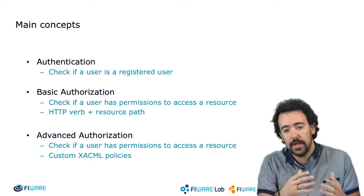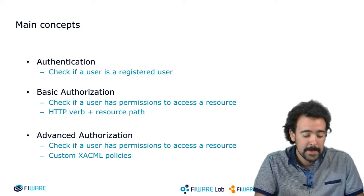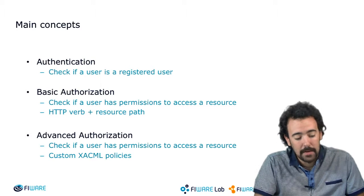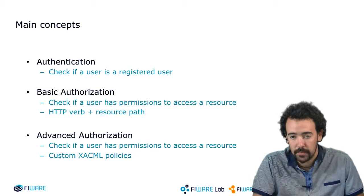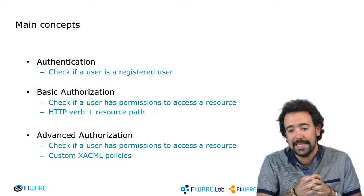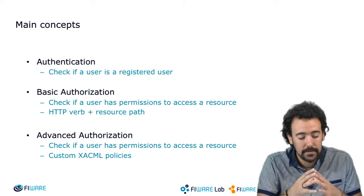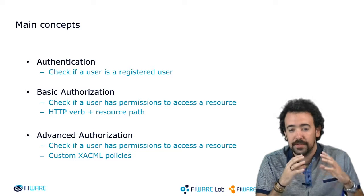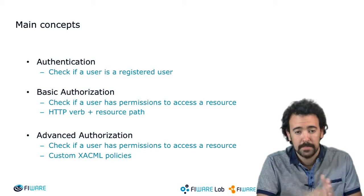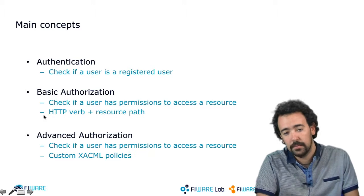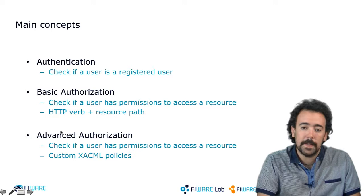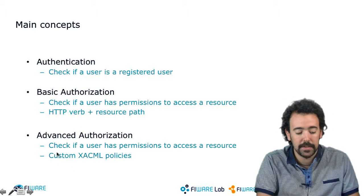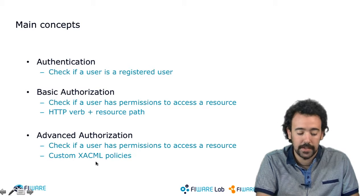To refresh the main concepts of these three levels of security: the first one configures the Wilma component to check only authentication — whether a user is correctly authenticated in the environment. In the second one, I also check if the user has the needed rights to access the specific resource, and I check permissions in the form of HTTP verb and path. The third, more advanced level uses the same idea but permissions are set in the form of XACML policies.